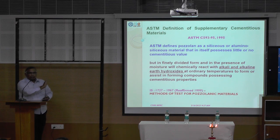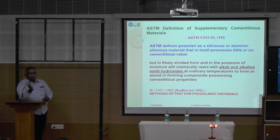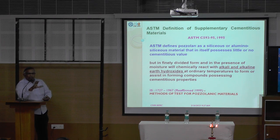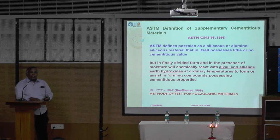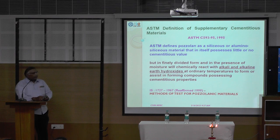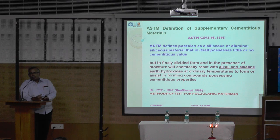Fly ash, as it is, is not binding, though it is having this composition. You may classify fly ash into two kinds: Class F and Class C. Class F has silica — the calcium hydroxide or calcium oxide content is very, very less. Whereas Class C has calcium oxide also. So that itself is a binding material — it will act. Class C fly ash may act as a binding material, as a replacement of cement.